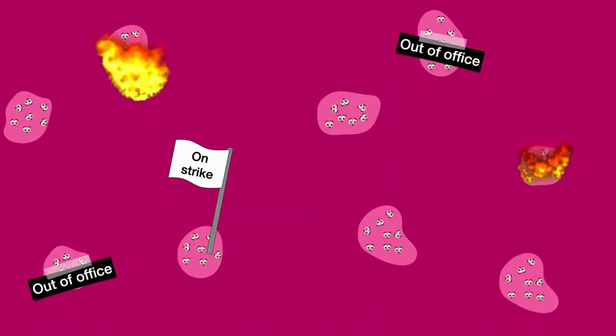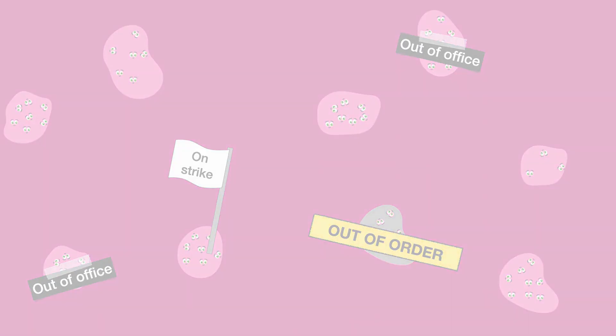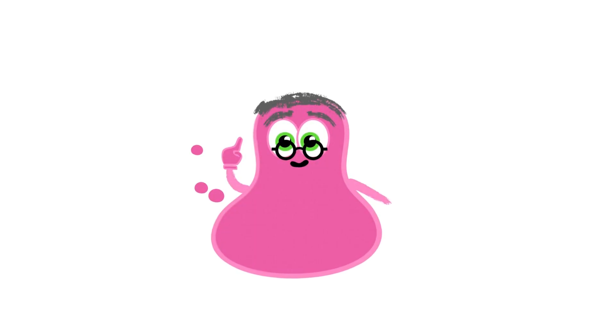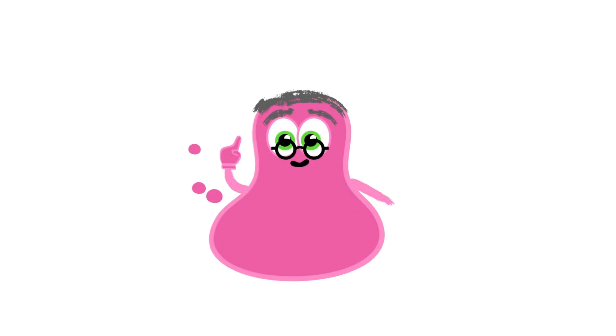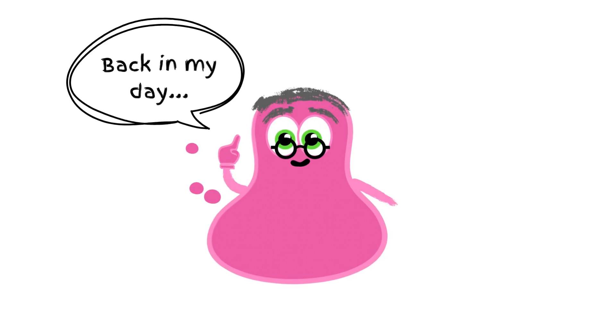When beta cells are lost or do not produce enough insulin, diabetes develops. Luckily, beta cells live for a long time. In fact, we sometimes carry the same beta cells for decades.